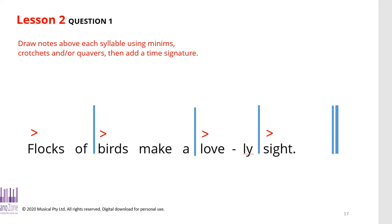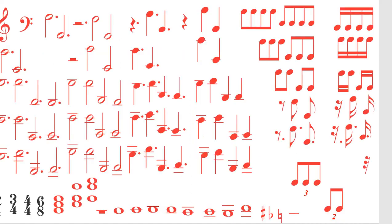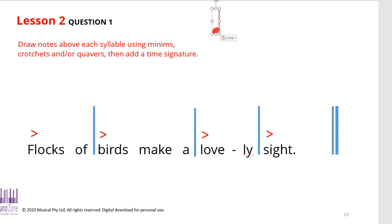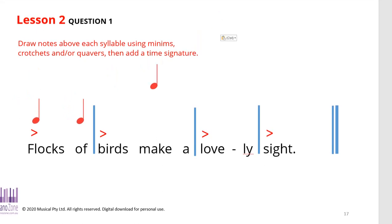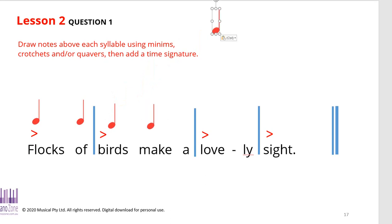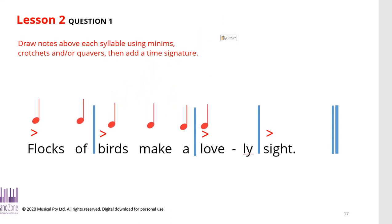I'm going to grab a couple of crotchets so we can play around with this and work out this question together. I need a crotchet for each of those sounds: 'Flocks of birds make a lovely sight.' Now here's my problem — in the first bar I've got two beats, in the second bar I've got three, in the third bar I've got two, and in the fourth bar I've got one. That's going to be a bit annoying, so we've got to use combinations of different things.